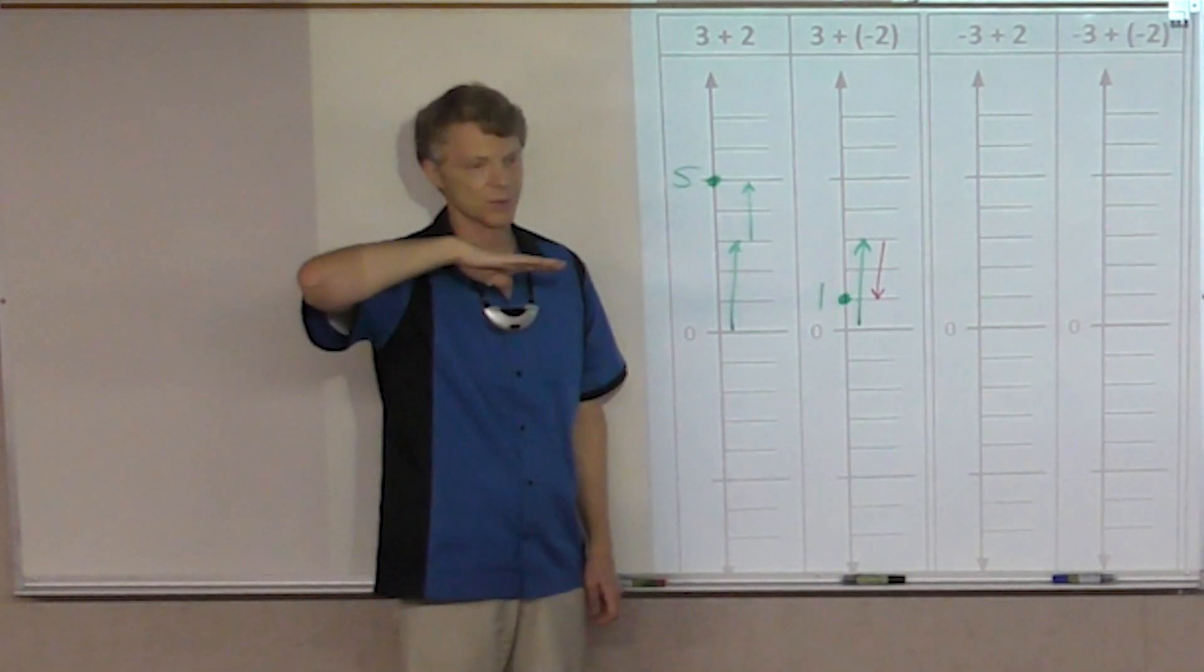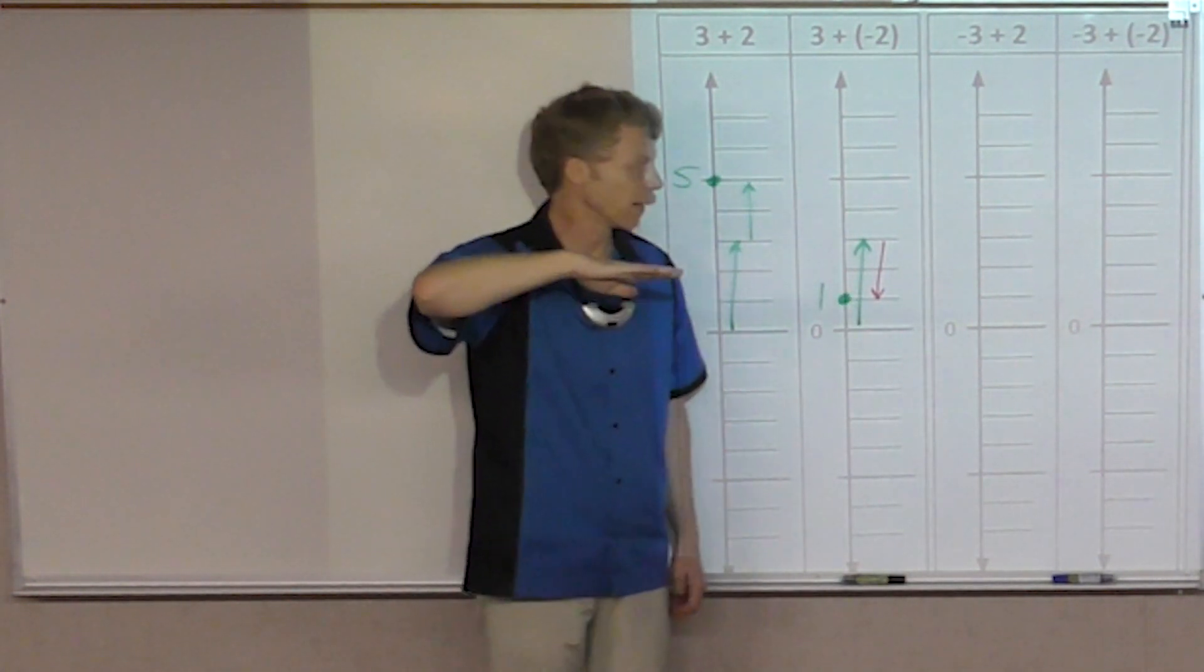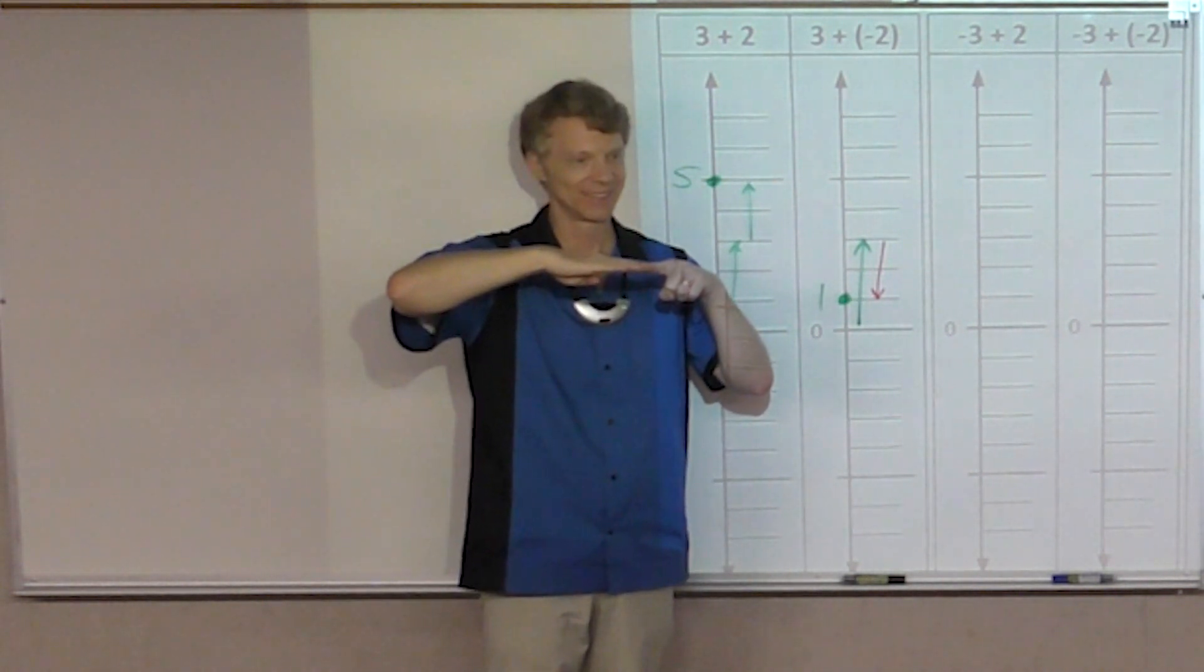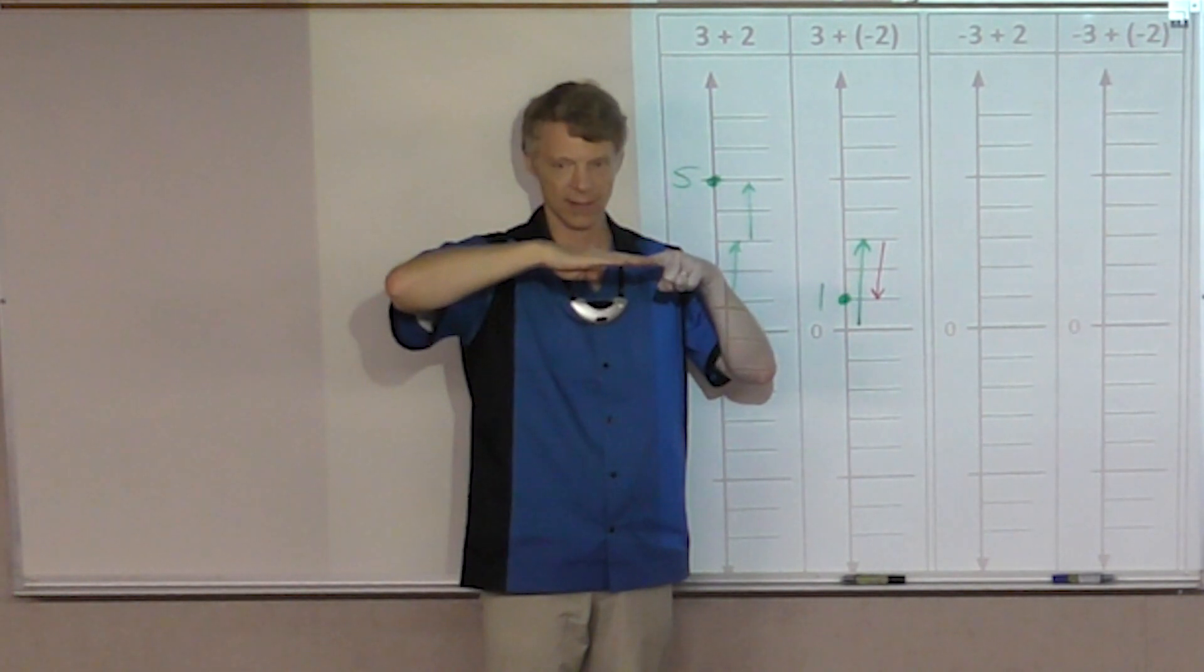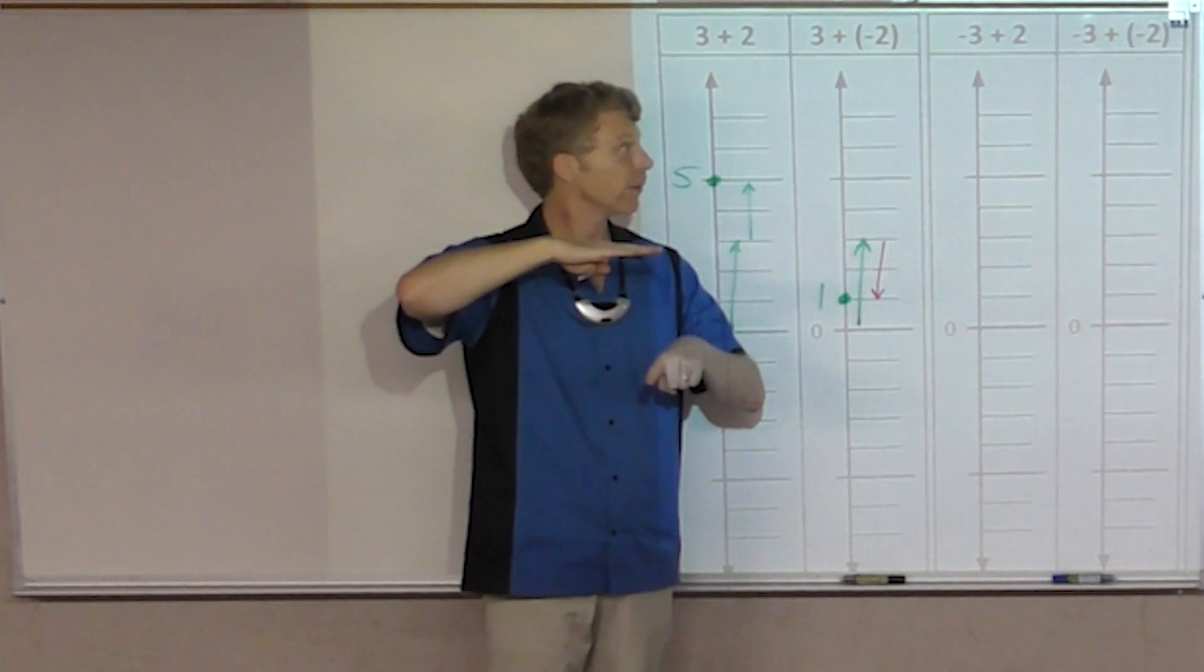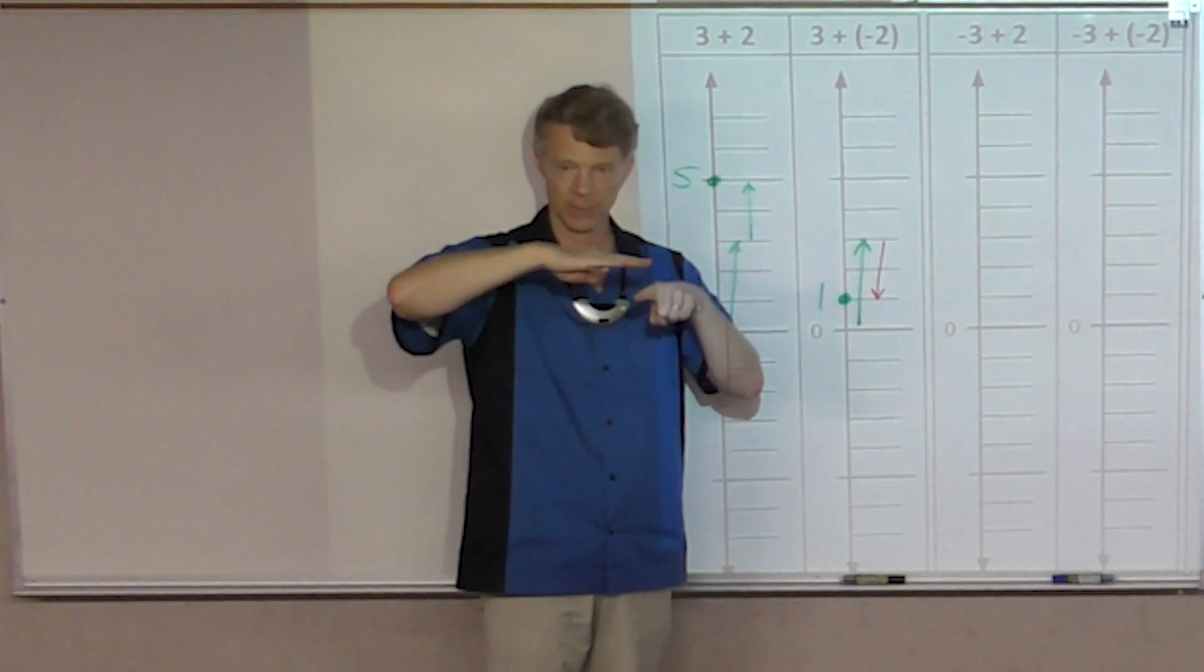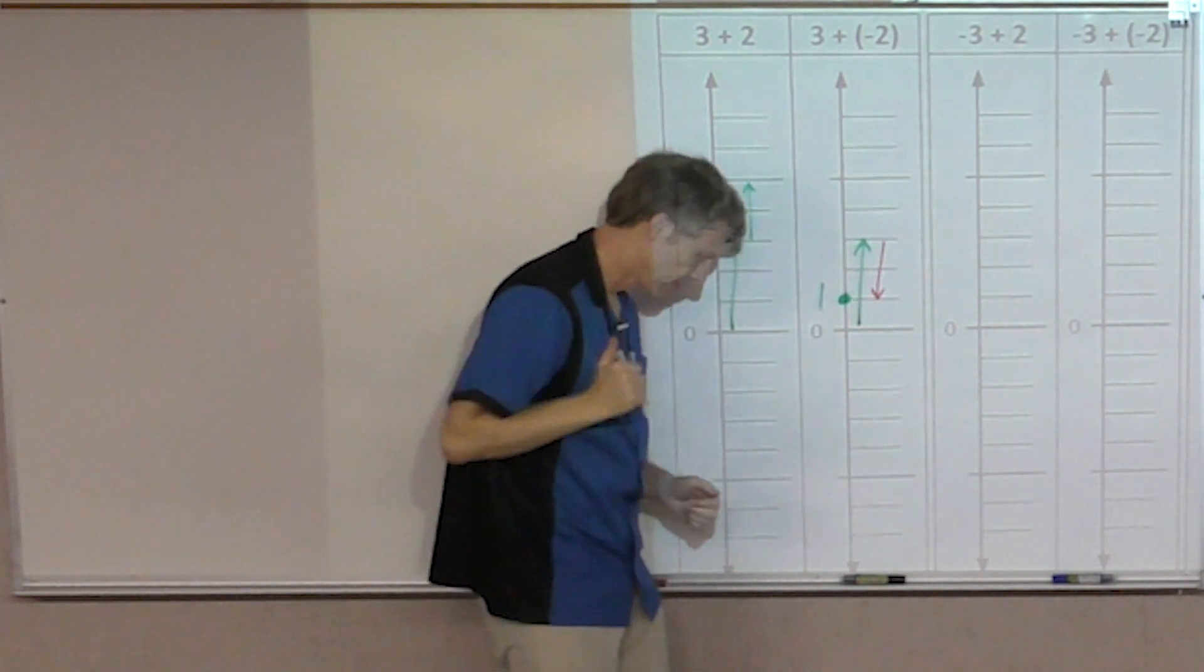Let's get ready for the next one. We start at what number? Zero. Zero, good. And then where do we go? Negative three. So show me what that looks like? Boom. Now we've got a plus two. Which way am I going to go? Up. Up. So my answer is? Negative one. Nice.